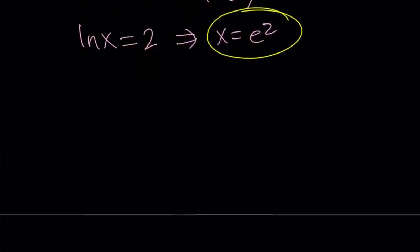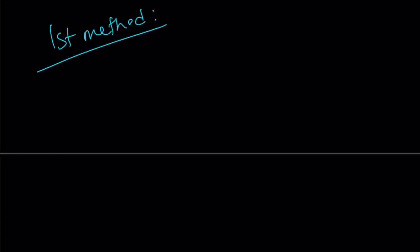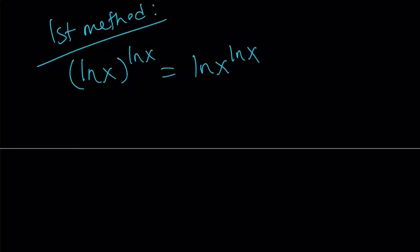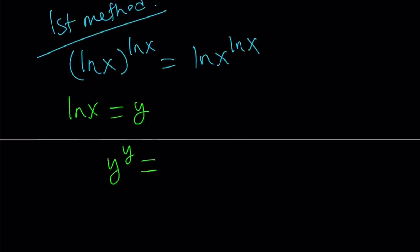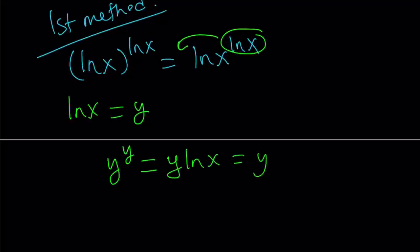Let's talk about the first method now. Let me rewrite the equation: we have ln x to the power of ln x on the left, and the other form without parentheses on the right. I'm going to use substitution — let's set ln x equal to y. Now you get y to the power of y. The right-hand side, when you move ln x to the front, becomes y times ln x, or you can write it as y squared.